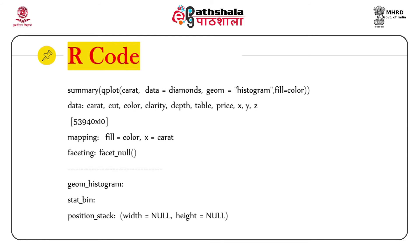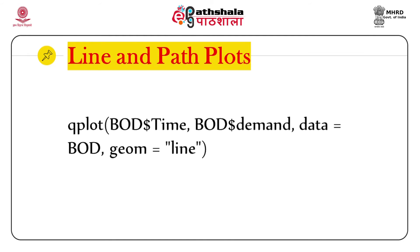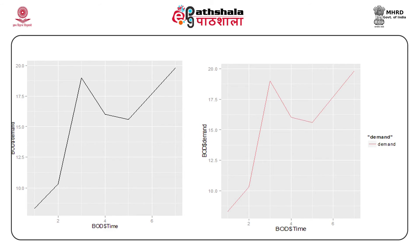Line and path plots are typically used for time series data. Line plots join the points from left to right, whereas path plots join the points in the order they appear in the dataset. Line plots usually have time on the x-axis and show how a single variable has changed over time. Path plots show how two variables have simultaneously changed over time. Have a look at the R code and the line diagram showing the relationship between time and demand of oxygen, using the BOD (biological oxygen demand) data.